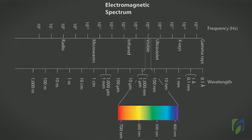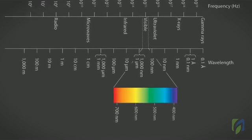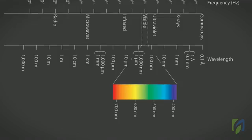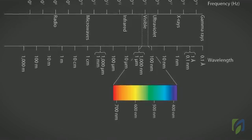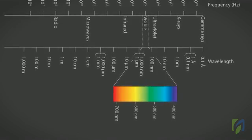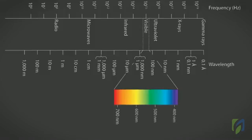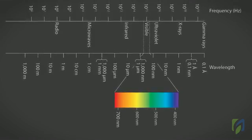Light is a part of the spectrum of electromagnetic radiation. Light is simply a name for the wavelengths in the electromagnetic spectrum that can be detected by the human eye. Light wavelengths are usually measured in nanometers, which is abbreviated as NM.